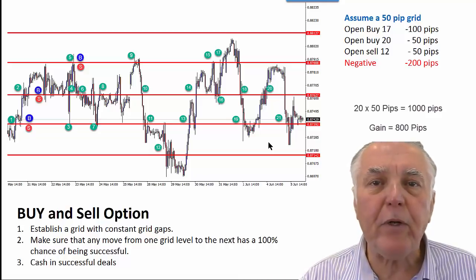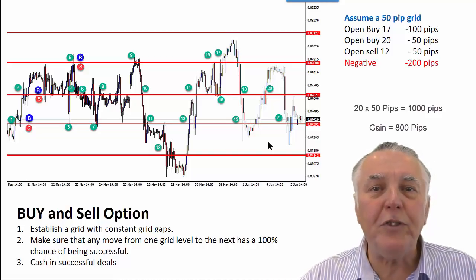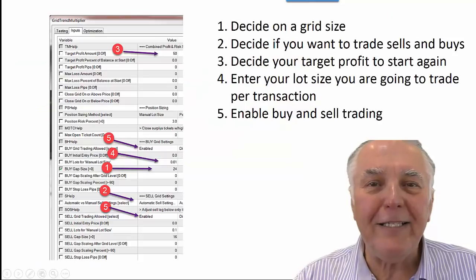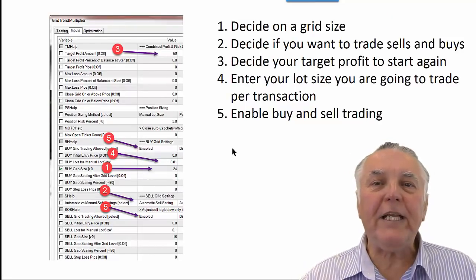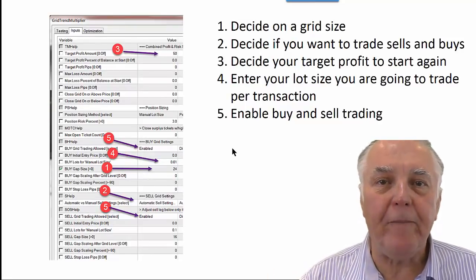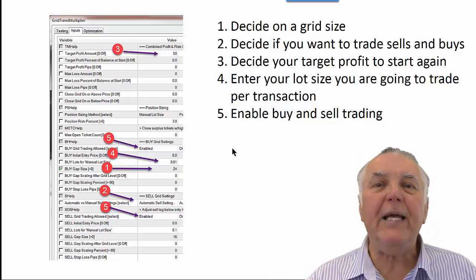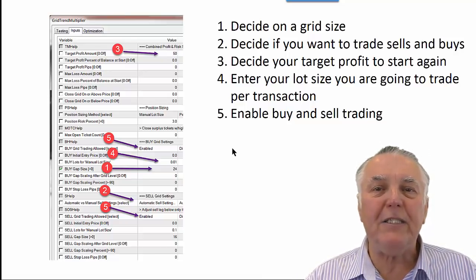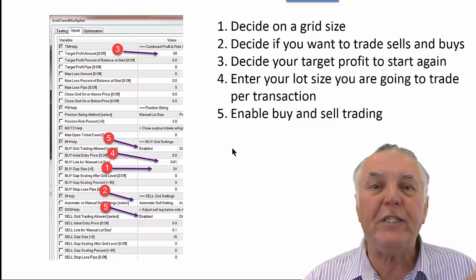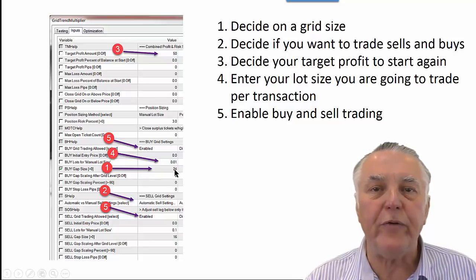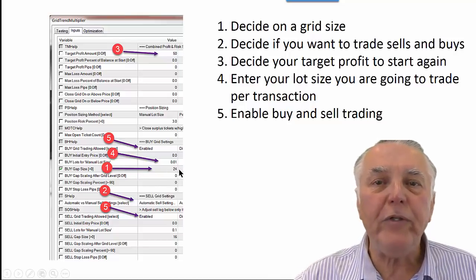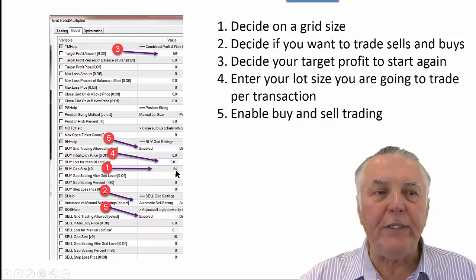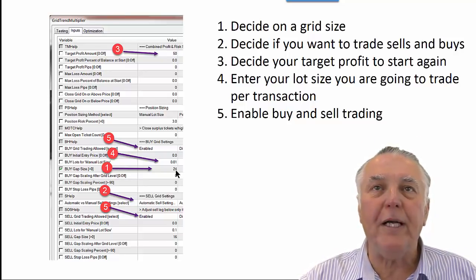Now if you found this a little bit confusing, rewatch it a few times and you'll soon understand how it works. Now let's skip to the input for this EA. The EA's input is actually extremely simple. The first thing you need to do is decide what grid size you're going to use — in this example, we're using a 24-pip grid.